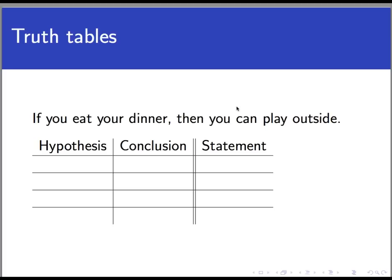Let's go back to the statement, if you eat your dinner, then you can play outside. And let's set up a table that records whether or not the entire statement is true for each possible situation that could happen here. So I'm making a table with three columns. One column will record whether the hypothesis condition is met or not. The middle column records whether the conclusion happens or not. And then the last column will record whether the entire statement is true or false.